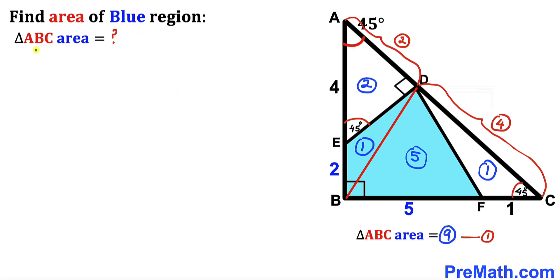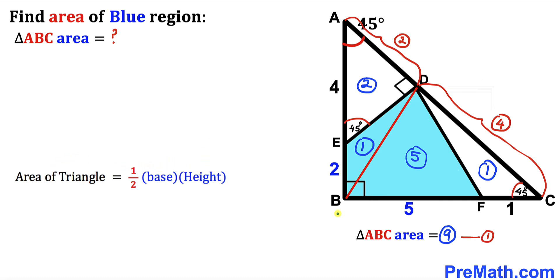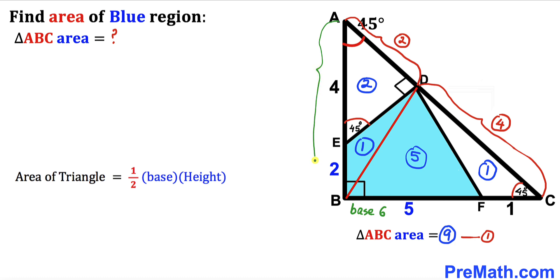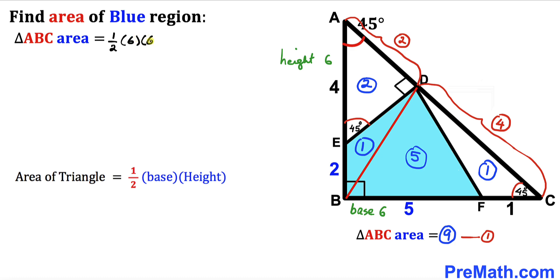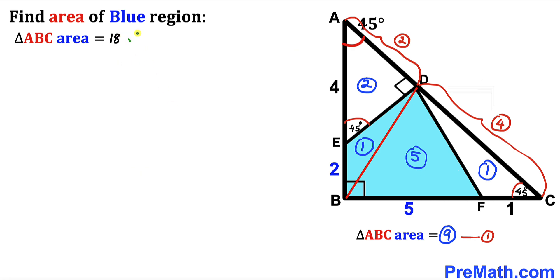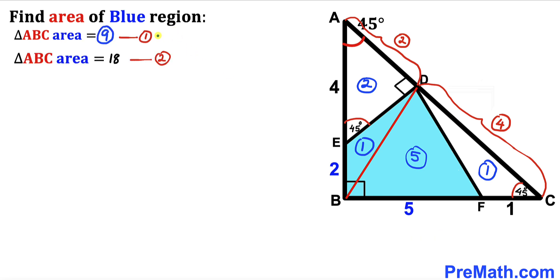Now let's calculate the numeric area of triangle ABC using the formula: area equals one-half times base times height. The base is BF plus FC, which is 5 plus 1 equals 6 units. The height is AE plus EB, which is 4 plus 2 equals 6 units. So area equals one-half times 6 times 6, which gives us 18 square units. Let's call this equation number 2.